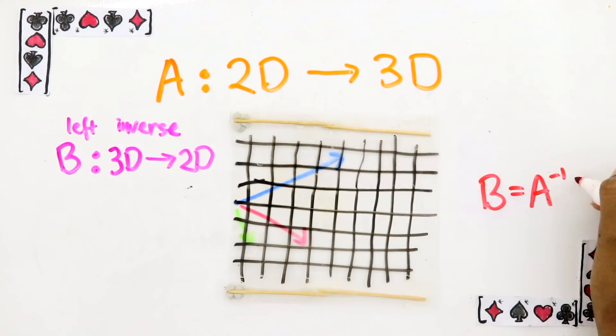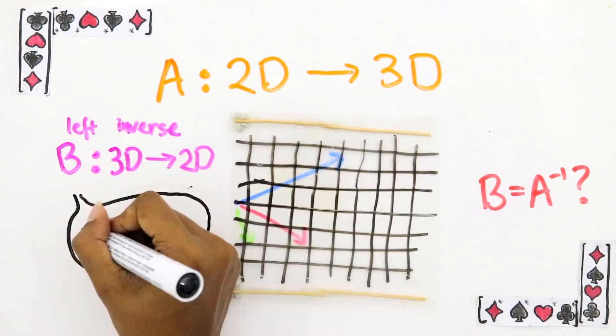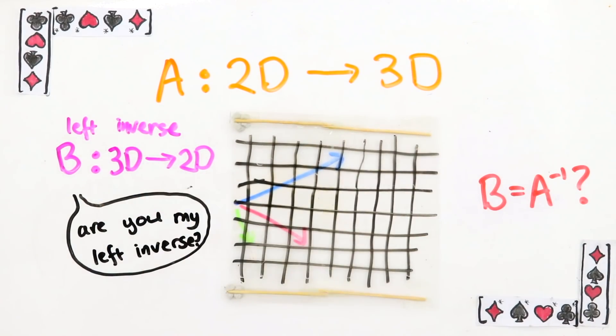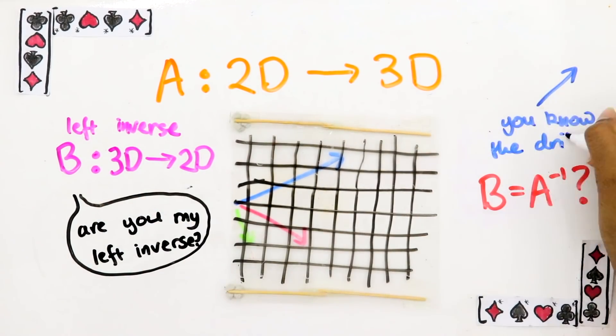Let B be a matrix that takes 3D vectors to 2D that does rotate this plane back. It is a left inverse of A. Now is B the inverse of A? In other words, is A B's left inverse? Pause the video and think about it.